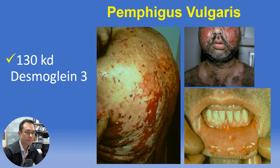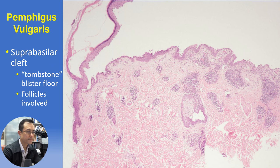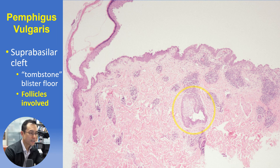Returning to immunobullous disorders — pemphigus vulgaris is mediated by autoantibodies targeting desmoglein 3, which is distributed most prominently in basilar epithelium and is associated with a much stronger predilection for mucous membrane involvement compared to pemphigus foliaceus. At scanning magnification we can appreciate a mostly suprabasilar acantholytic cleft affecting the epidermis as well as contiguous adnexal epithelium including hair follicles.